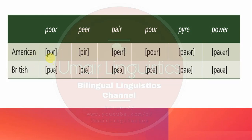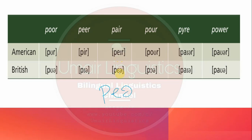For the word 'poor', in British English a diphthong is present, while in American English the pronunciation is simply 'poor' without that diphthong. As Peter Roach mentioned in the Cambridge English Pronouncing Dictionary, there are distinctions in the transcription of words like 'poor' and 'power' between British and American English. In some books one transcription is given, but as noted in the Cambridge English Pronouncing Dictionary, the representation may vary.